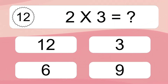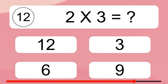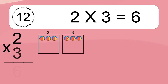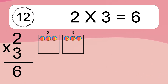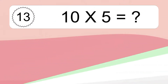Two times three equals six. We have two boxes, and each box has three colorful balls inside. If you count all the balls in all the boxes together, you will have two times three balls. This equals six balls.